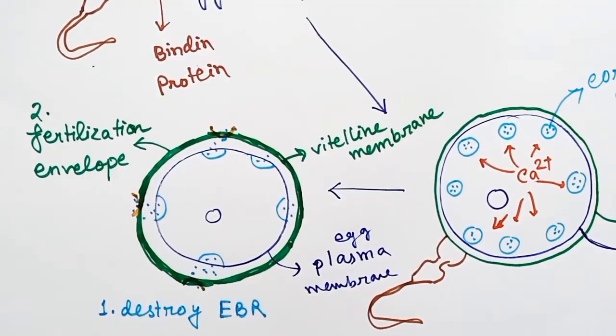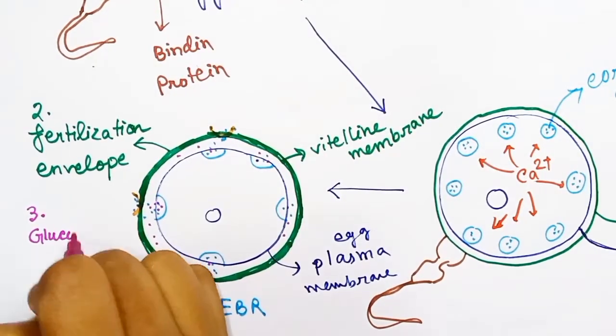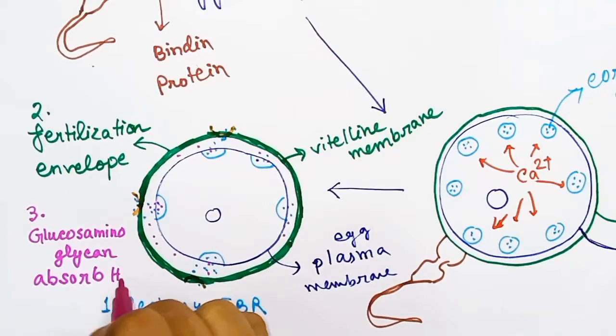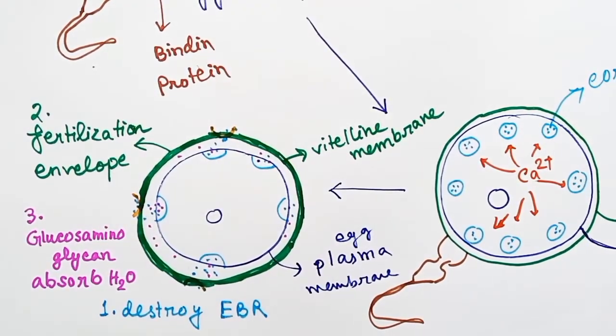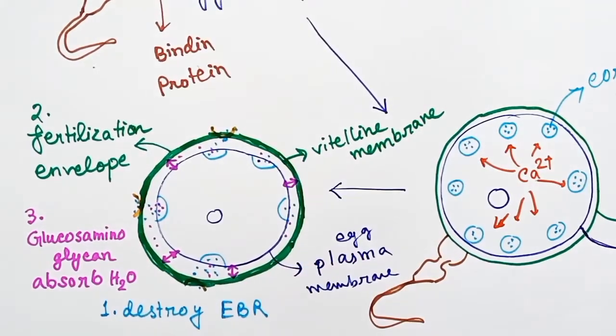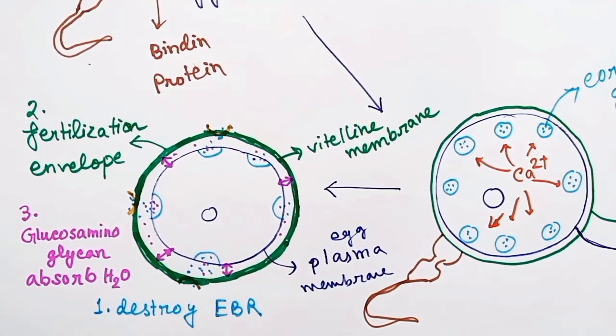The third thing is the glucosaminoglycan, which is present in the cortical granules. This absorbs water in the perivitaline space. Due to the absorption of water, this space widens and swells up, so that the fertilization envelope goes away from the plasma membrane of the ovum. The penetration of sperm gets harder.